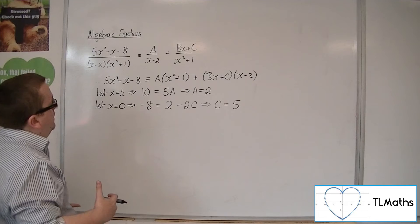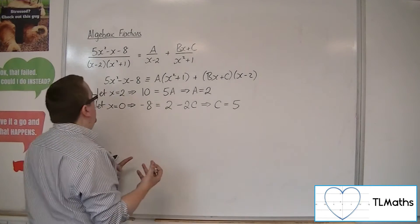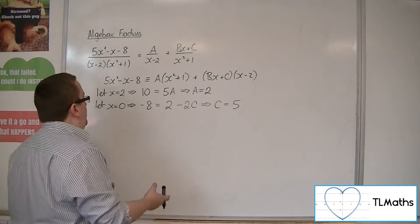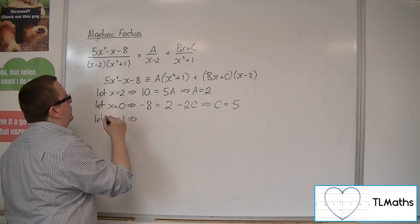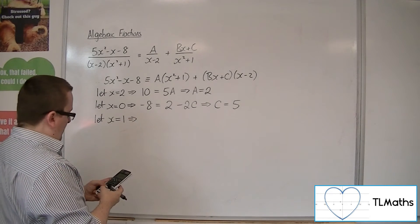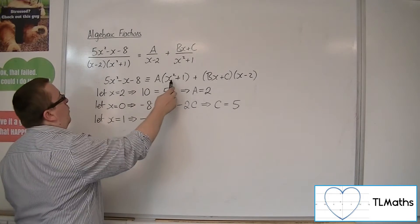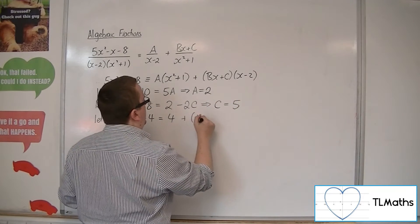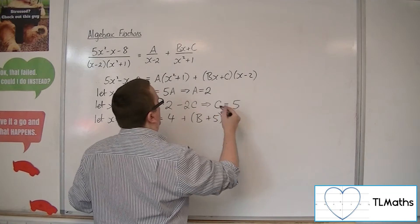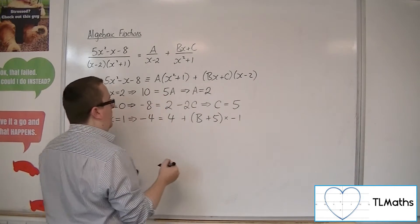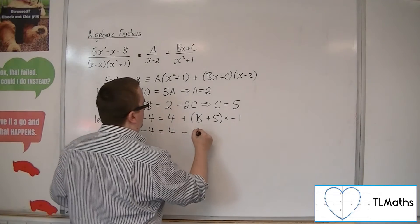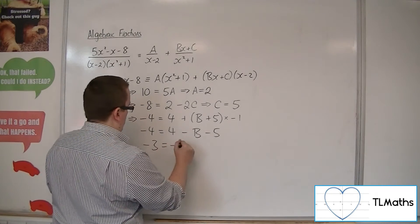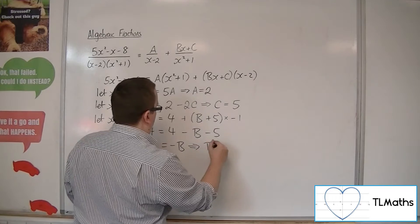But I still need to find B. Now, because I've already used x is 0, it makes sense to use another value of x that is quite straightforward to use. So let x is 1, for example. So we're going to get 5 take away 1 take away 8 on the left-hand side, so minus 4. We're going to get 1 plus 1, so 2 lots of A, so that's 4. And we're going to get here B plus C times by 1 take away 2, so minus 1. So minus 4 is 4 minus B minus 5. So minus 4 take away 4 plus 5 is minus 3. So that means that B would have to be 3.